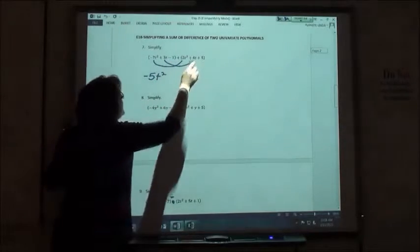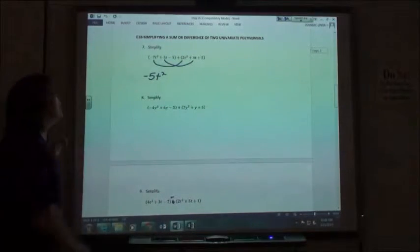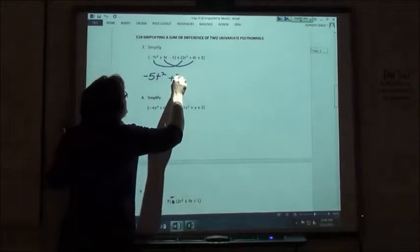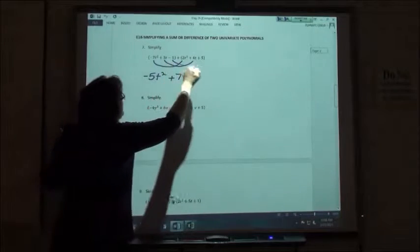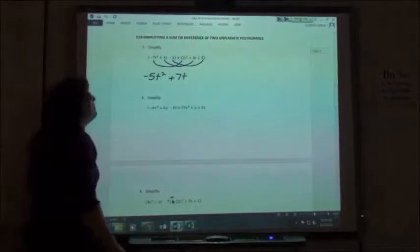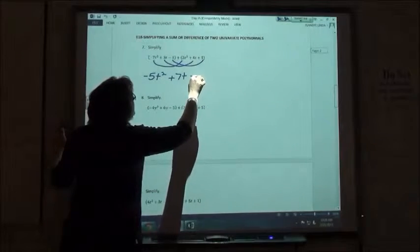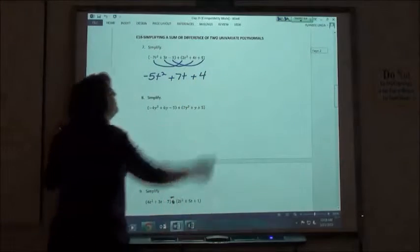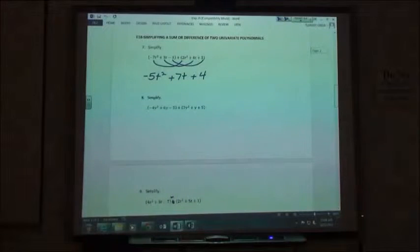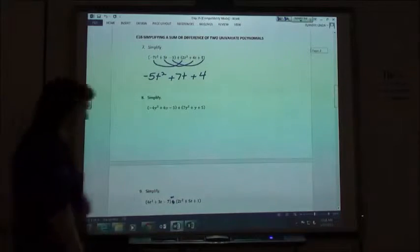And then I'm going to take the 3t plus the 4t and I would get plus 7t. And then I'm going to take my negative 1 plus my 5 plus 4. So negative 5t squared plus 7t plus 4 is just going to be my answer when I add those two expressions together.